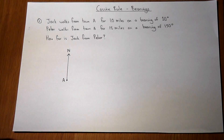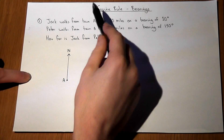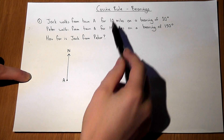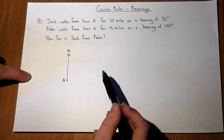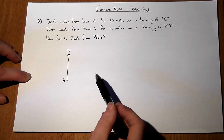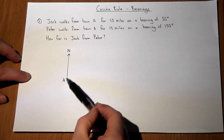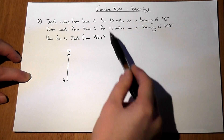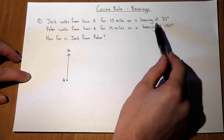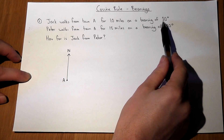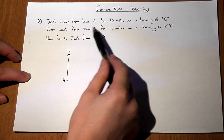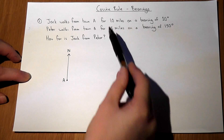This question looks at a cosine rule question in the context of bearings. We're told two things: Jack walks from town A for 10 miles on a bearing of 20 degrees, and Peter walks from town A for 30 miles on a bearing of 130 degrees.